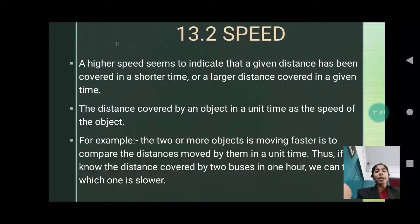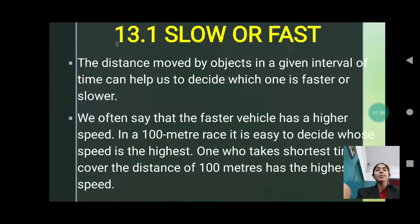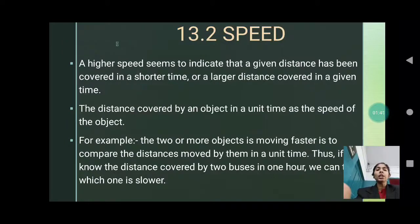Now, let us see what is speed. A higher speed seems to indicate that a given distance has been covered in a shorter time, or a large distance covered in a given time. The distance covered by an object in a unit time is the speed of the object. Let us see one example.